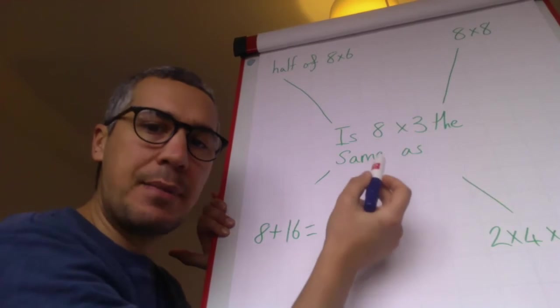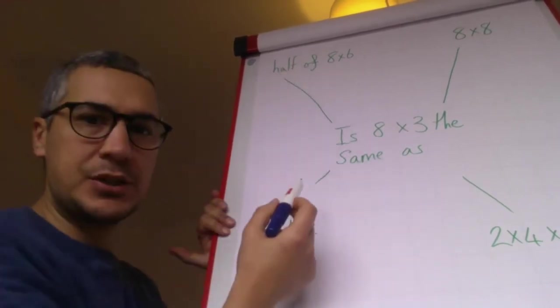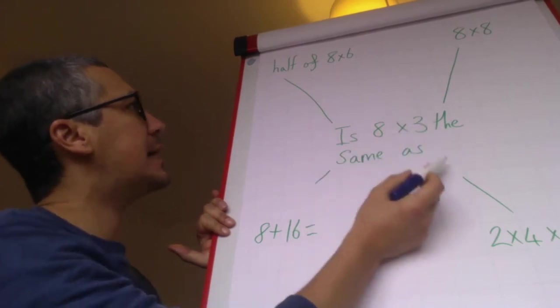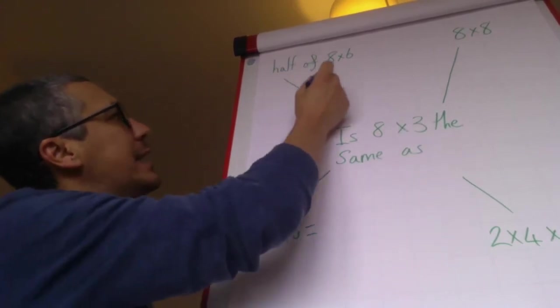It says, is eight times three, or eight lots of three, the same as these other calculations? Hopefully you can see this one: is eight times three the same as half of eight times six?